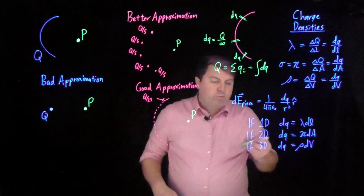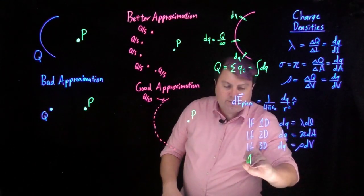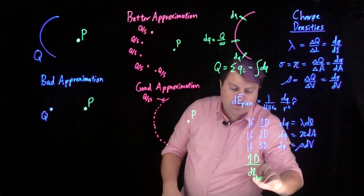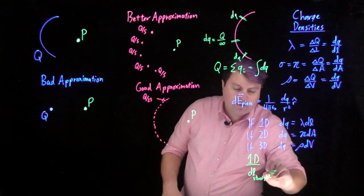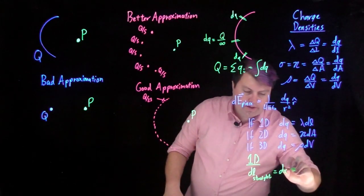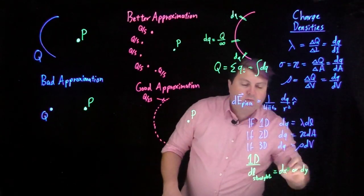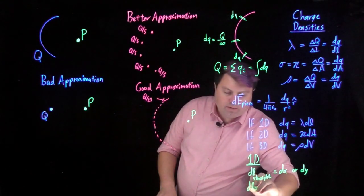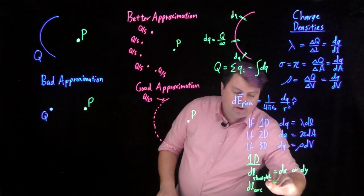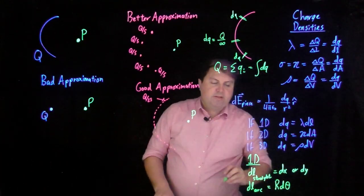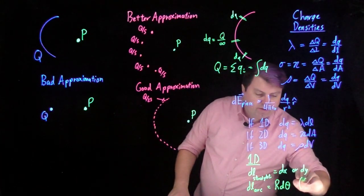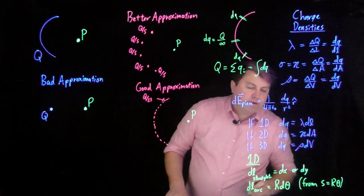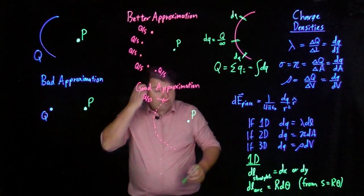And then for our 1d cases, we'll go into other cases a little bit later. The dl for a straight piece is just equal to dx or dy or whichever direction that we're going in. And then the dl for an arc is going to be the radius times d theta. This is coming from the arc length equation S equals r theta, although we can talk about it a little bit differently.